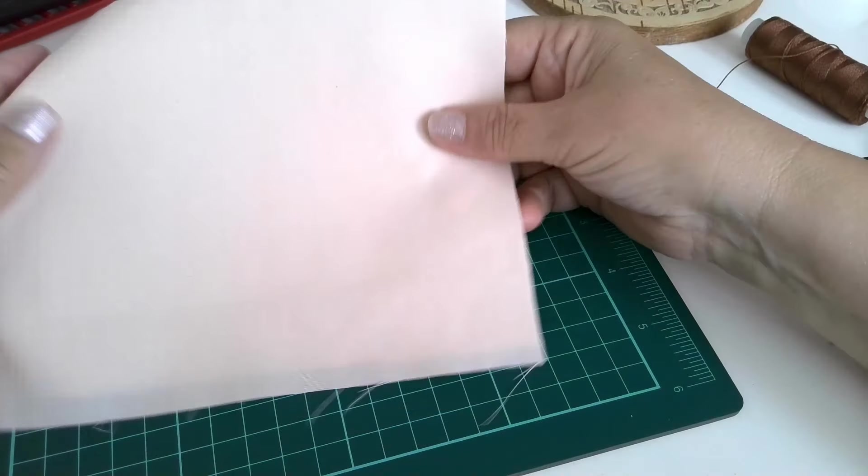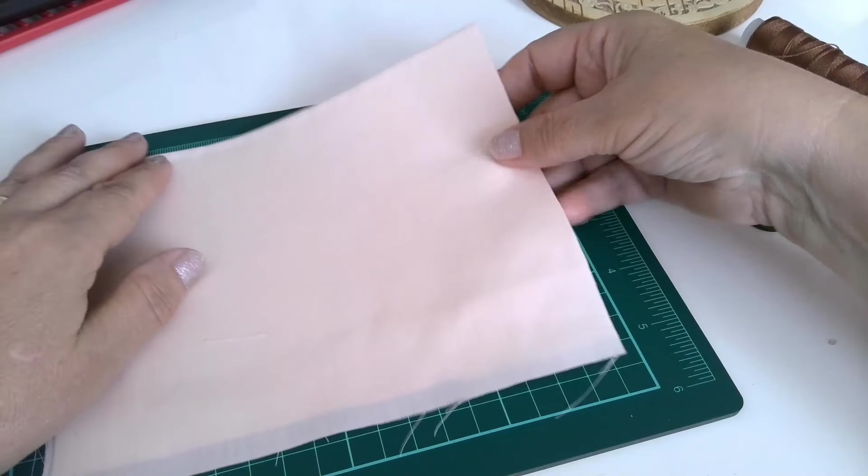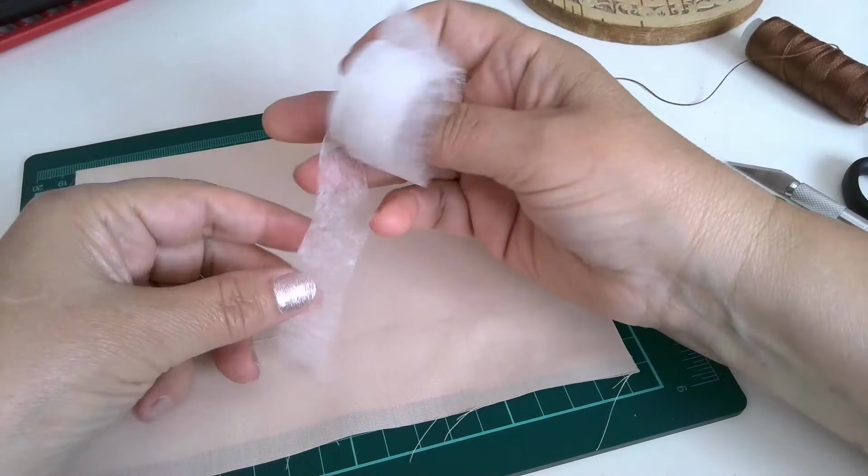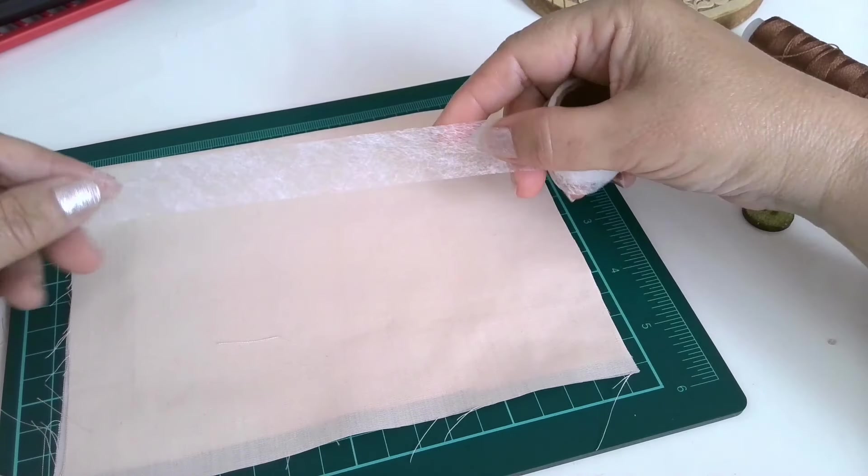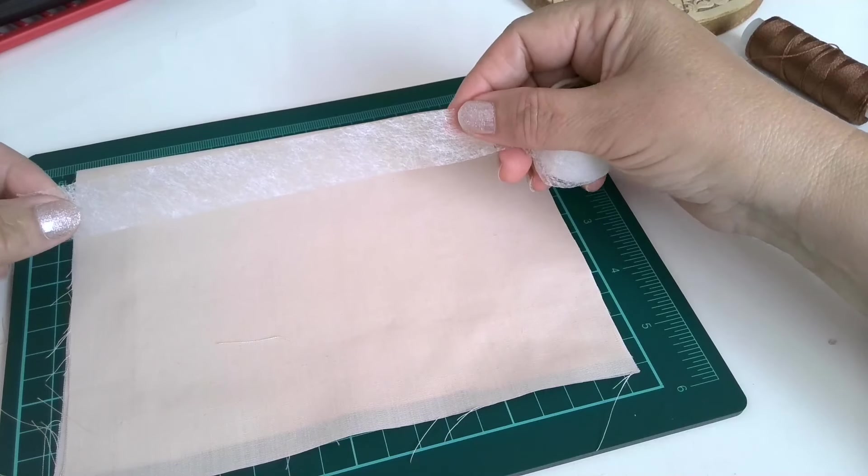If you don't have this big piece of interfacing you can use these rolls which we are usually using for hems.